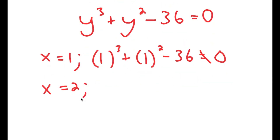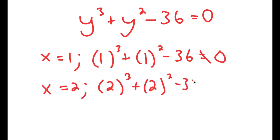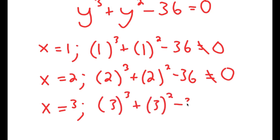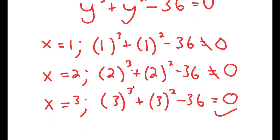If y equals 1, we get 1 to the power of 3 plus 1 squared minus 36, which is equal to 2 minus 36, which does not equal 0. For y equals 2, I get 2 to the power of 3 plus 2 squared minus 36, which is equal to 8 plus 4 minus 36, which again does not equal 0. For y equals 3, I get 3 to the power of 3 plus 3 squared minus 36. 27 plus 9 is 36, and 36 minus 36 does equal 0, so y equals 3 is the solution.